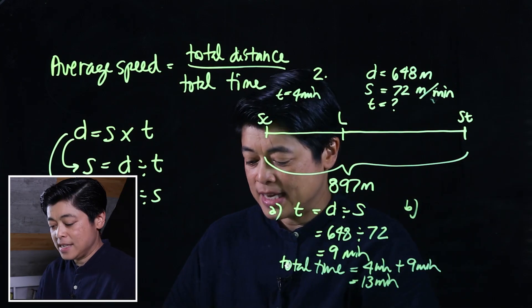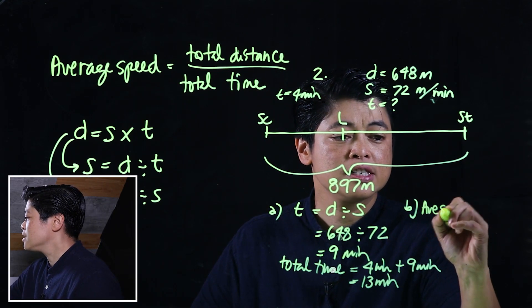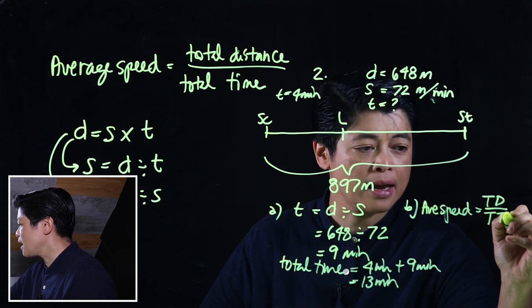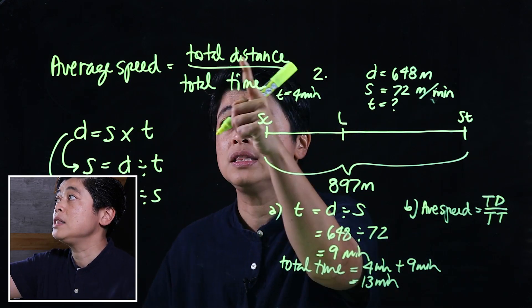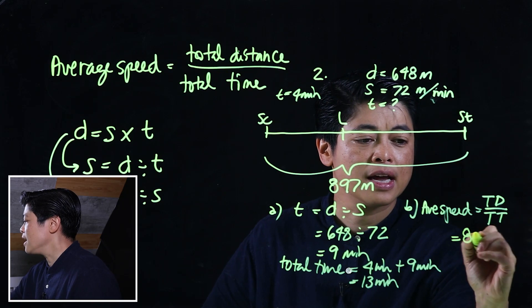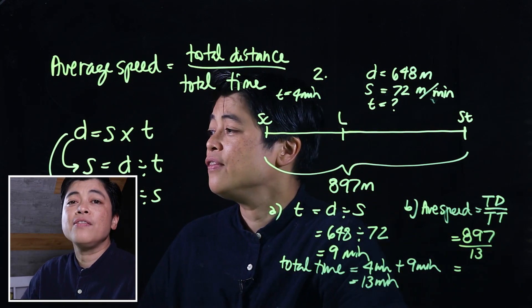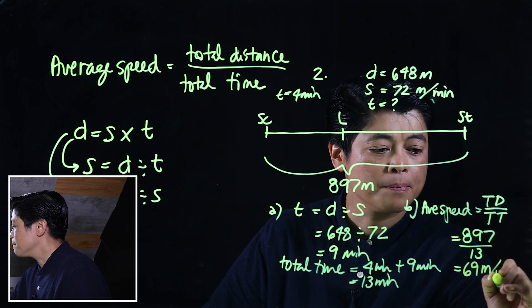In part B: find Adele's average speed for the whole journey. Average speed equals total distance over total time. The total distance is 897 meters and the total time we just found to be 13 minutes. Dividing using a calculator gives 69 meters per minute.